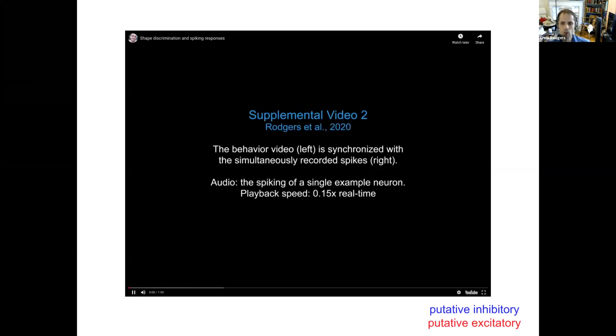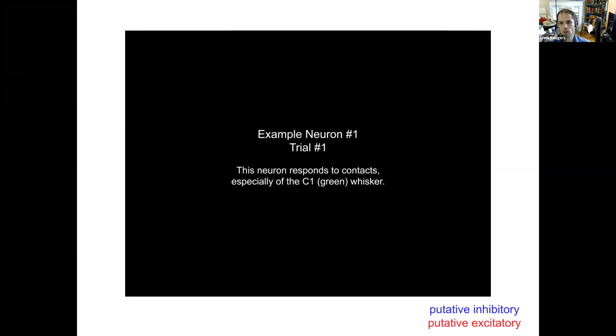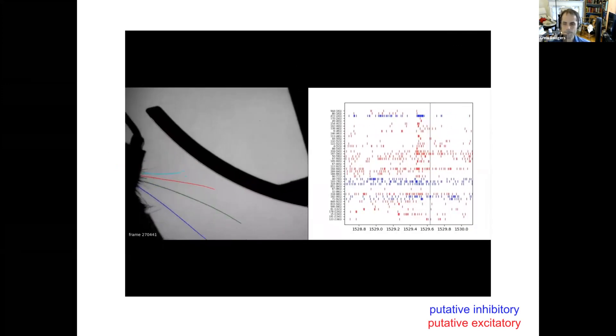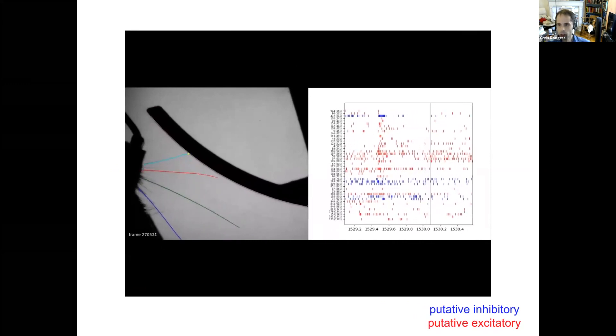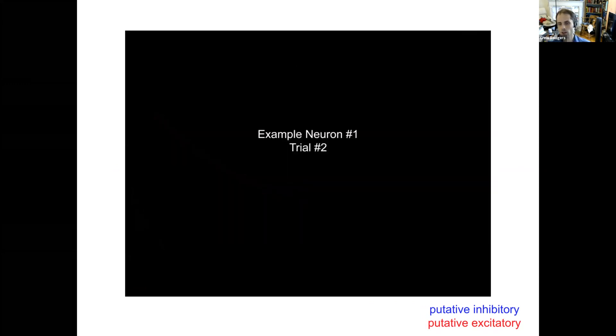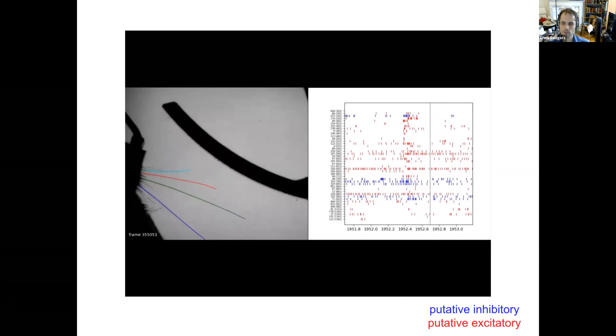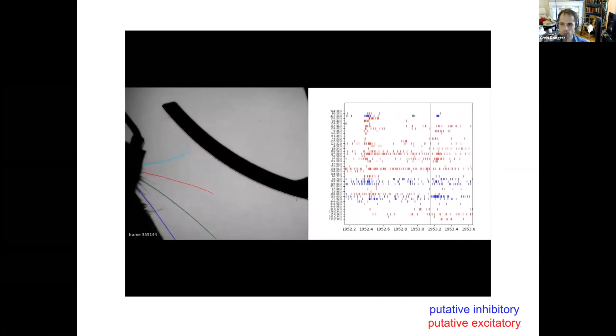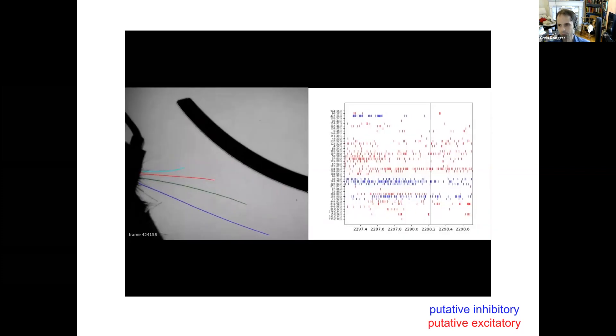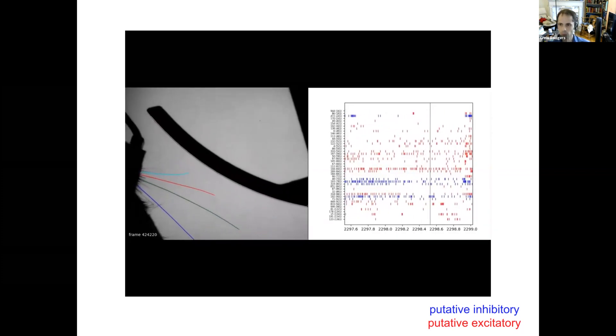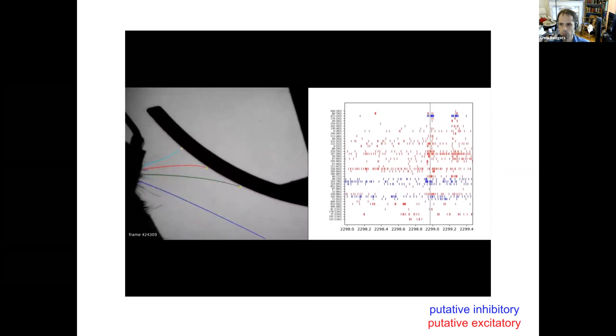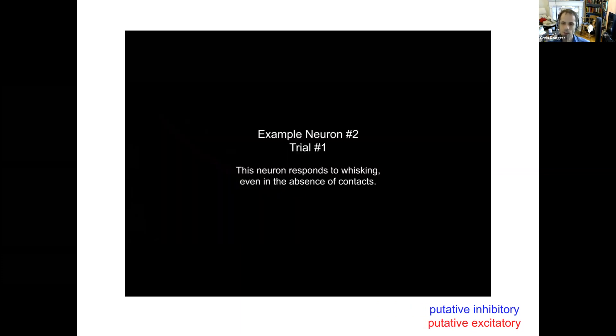So now I want to show you a video of some spiking data. This is data I collected in somatosensory cortex, S1. You'll see the behavior on the left and the spikes that I recorded on the right, and audio from one example neuron. So the neuron that you can hopefully hear is emitting spikes in response to whisker contacts that are made. And now I want to show you a different neuron. You're going to hear audio now from a neuron that cares about whisking.